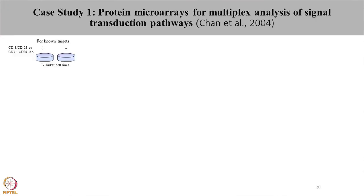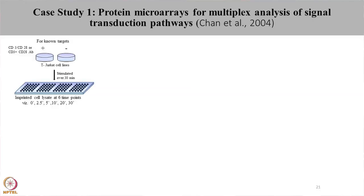Once they were sure that this experiment is working, they took the Jurkat T cell lines and treated them with CD3 antibody, CD28 antibody, or CD3 and CD28 antibody in combination. The cell lines were stimulated over the period of 30 minutes and the cell lysates were imprinted at 6 different time points: 0 minutes, 2.5 minutes, 5 minutes, 10 minutes, 20 minutes, and 30 minutes.